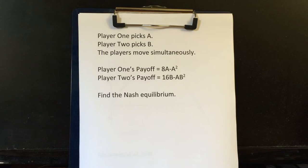Now, the Nash equilibrium is the no regret outcome. It's a Nash equilibrium if, after you see what the other person wrote, you don't regret your choice. All right, let's see how to solve this.